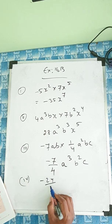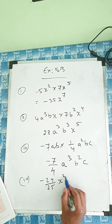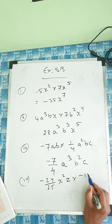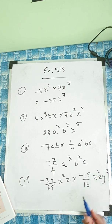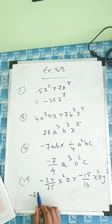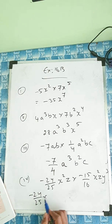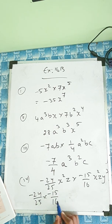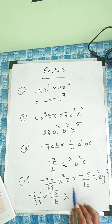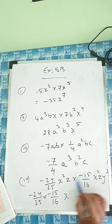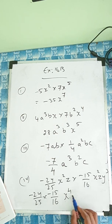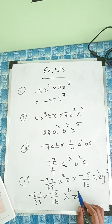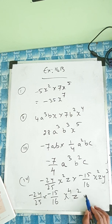Question number 4: minus 24 by 25 x squared z into minus 15 by 16 x squared z y cubed. So here minus 24 by 25 into minus 15 by 16. For x: power 2 and power 2, so 2 plus 2 is 4. For z: 1 here and 1 here, so 1 plus 1 is 2. And y only has power 3, so we just write it.